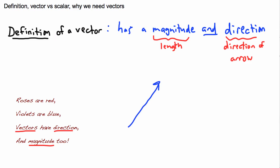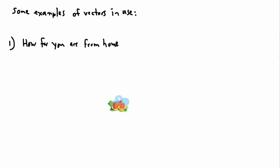So a vector is just an arrow. It has a length you can measure and a direction it's pointing — that's it. Vectors are just arrows. You might think that's pretty simple, but it turns out we can use them for all sorts of things in everyday life. For example, maybe you want to figure out how far you are from home.